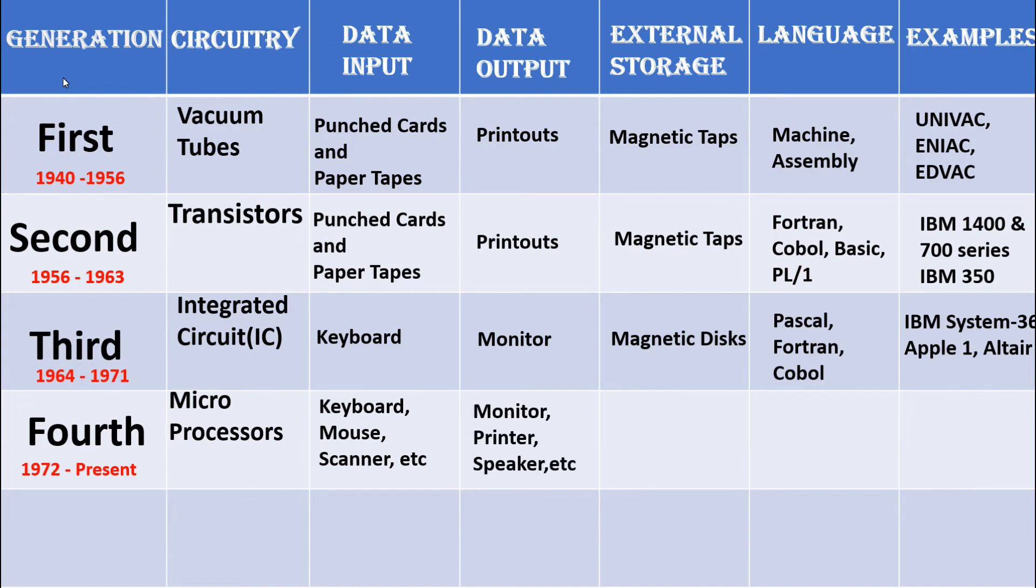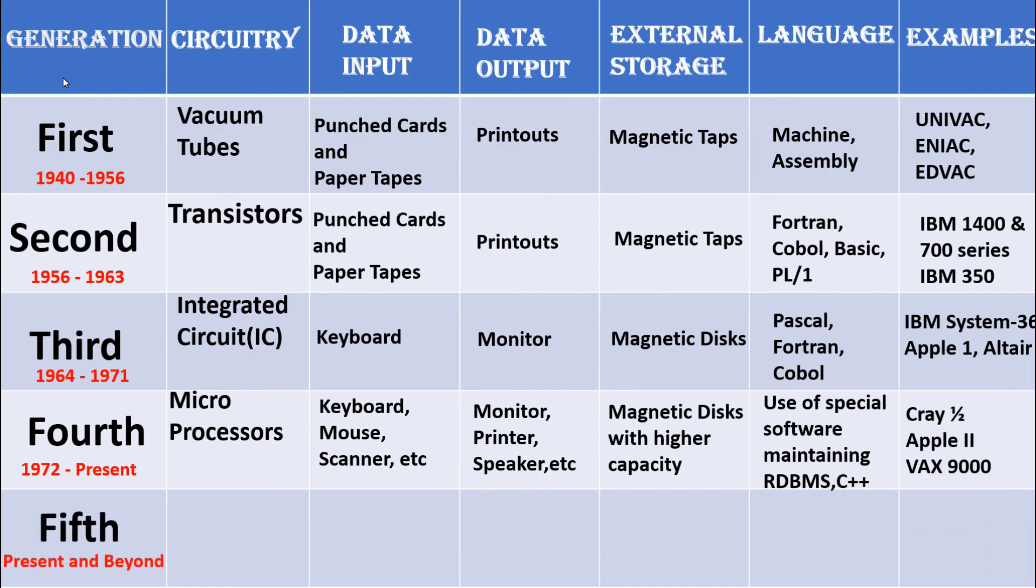They used magnetic disks with higher capacity as external storage. Systems in fourth generation used special software, maintaining RDBMS, C++, etc. Examples of systems in fourth generation are Cray 1, Apple 2, and VAX 9000.